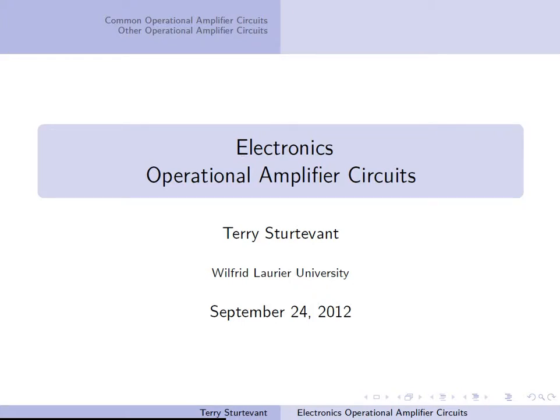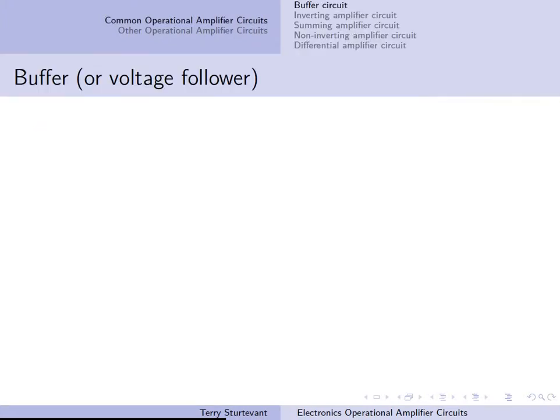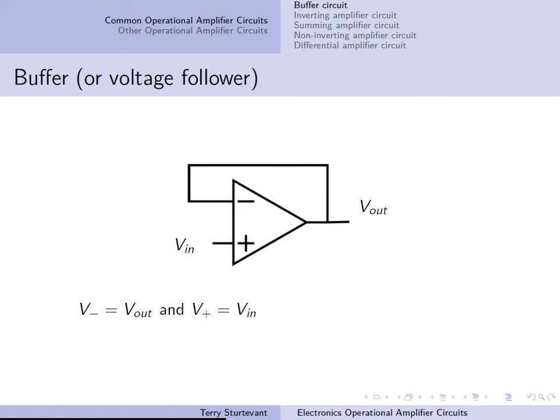This video is about operational amplifier circuits. The simplest operational amplifier circuit you can have is the buffer or voltage follower where the output follows the input.